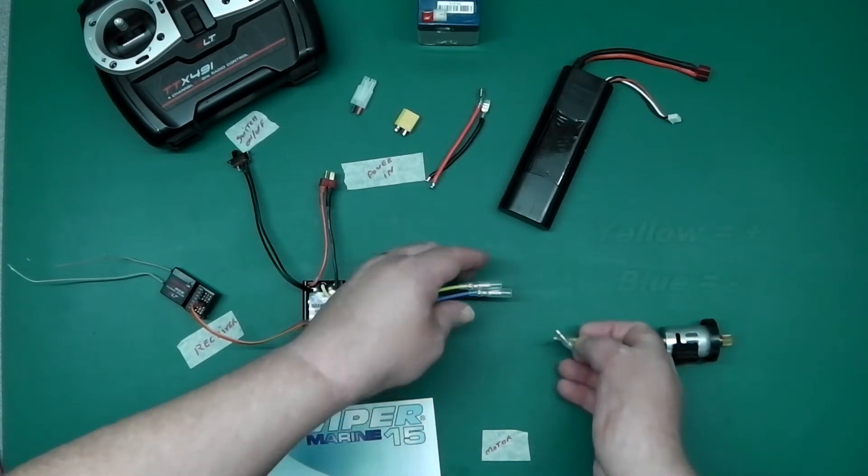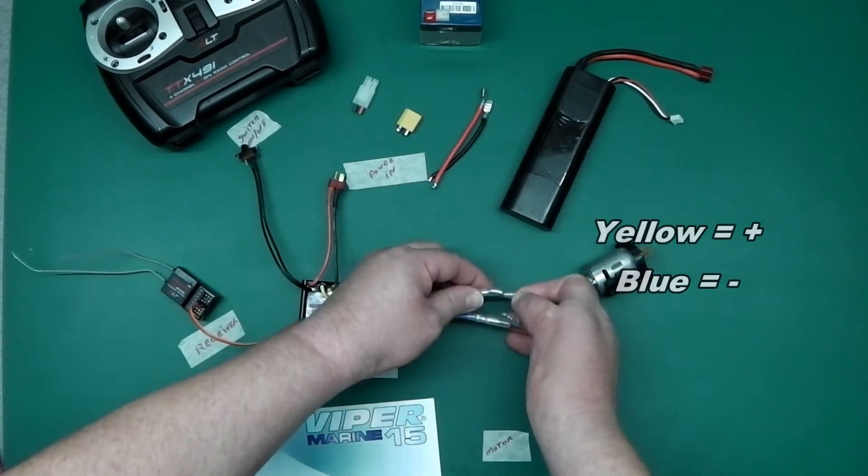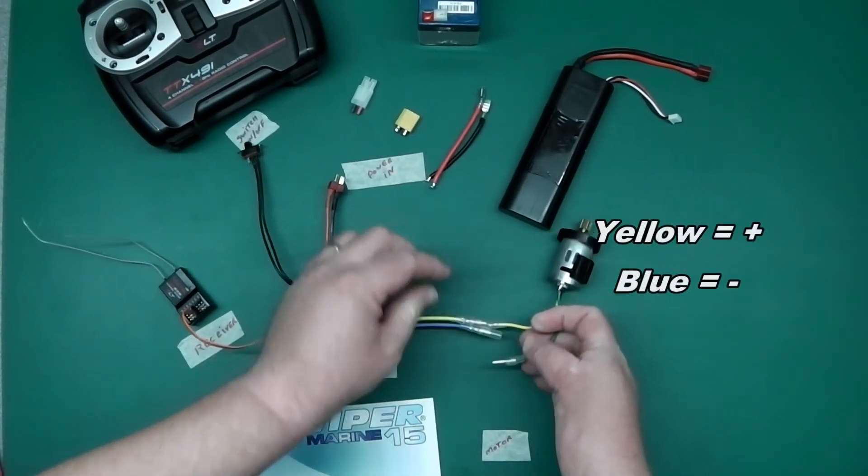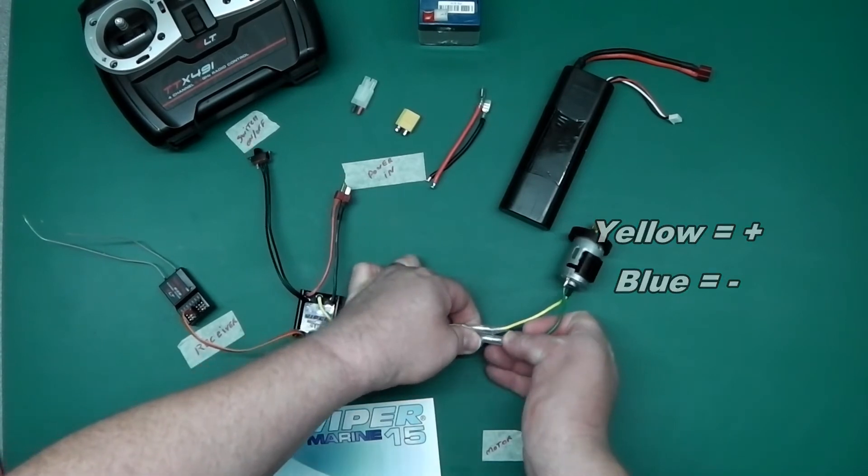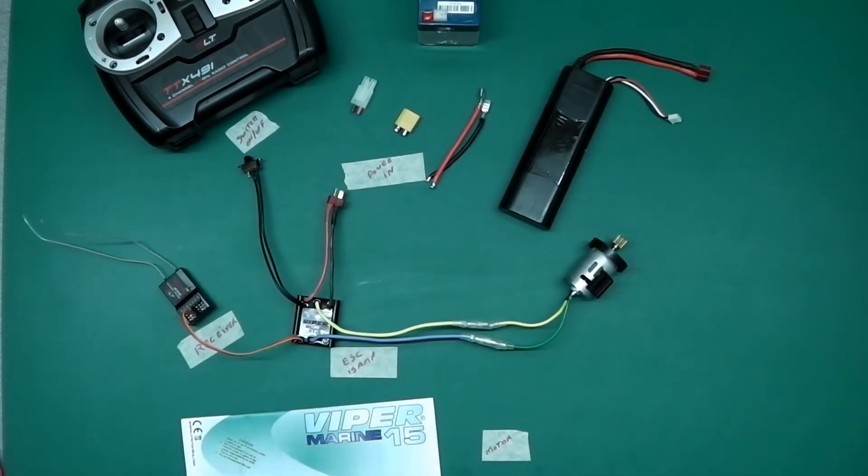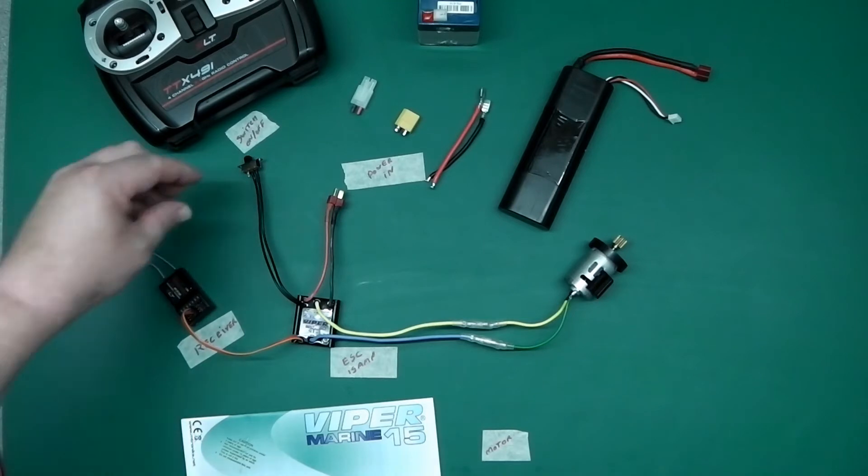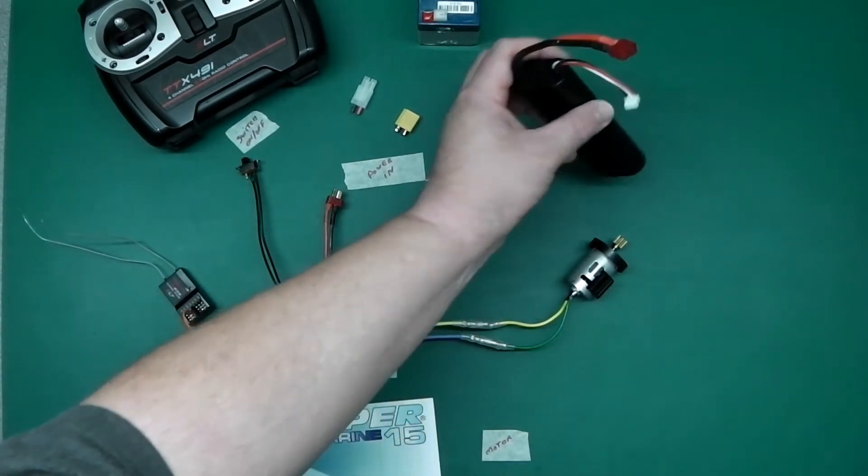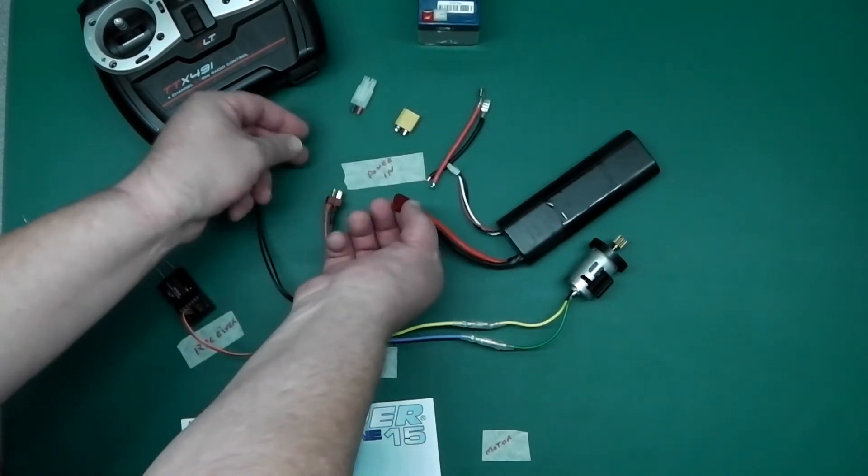Then you connect your motor. Yellow to yellow, blue to blue. In this case, very easy. The switch is in the off position. Then we connect our power. You can't mix it up.